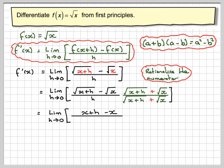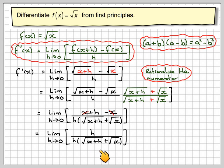On the bottom, we're just going to get h times all of square root of x plus h plus the square root of x. Now we can see that x minus x will cancel each other out. So we're left with the limit as h over h times the brackets of square root of x plus h plus square root of x.